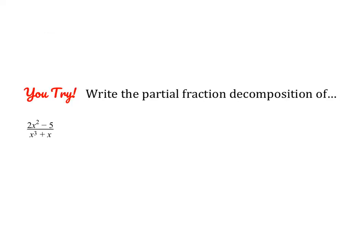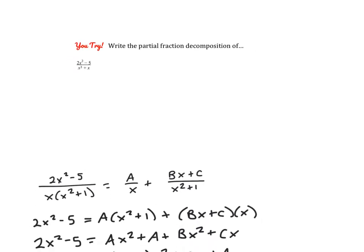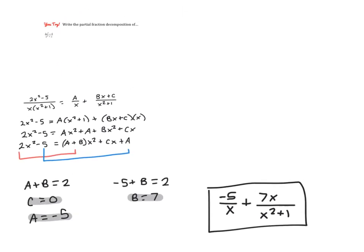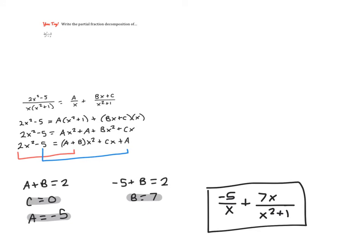Go ahead and pause the video and give this problem a try. Check the setup of your decomposition of fractions, then multiply by the LCD, distribute and combine like terms, and set the different parts of your quadratic equation equal to each other. Notice that the left-hand side doesn't have an x term, which is why c is equal to 0. So we have a plus b equals 2, c equals 0, and 4a equals negative 20, giving a equals negative 5. Substitute to solve for b, and here is the answer.